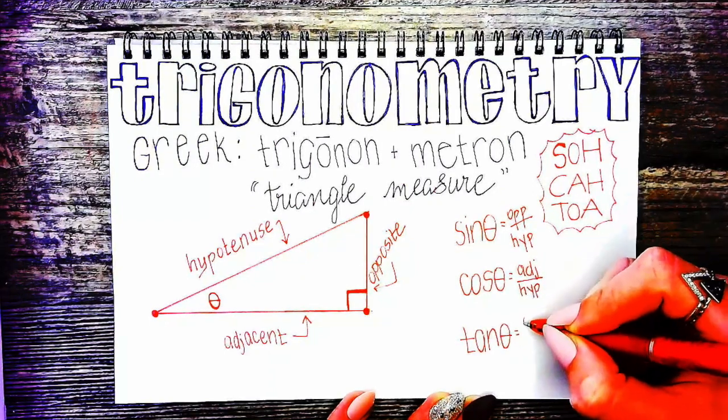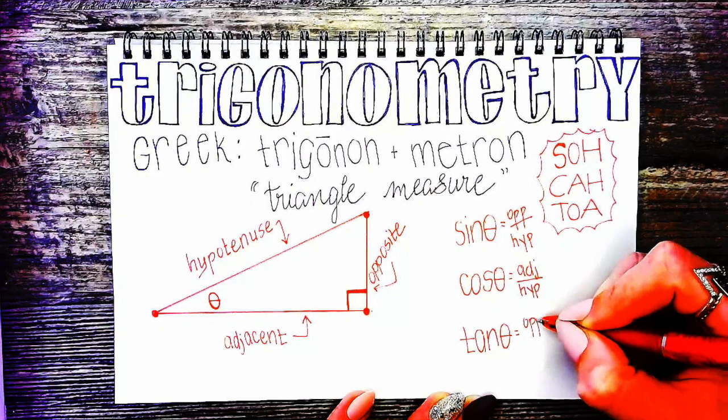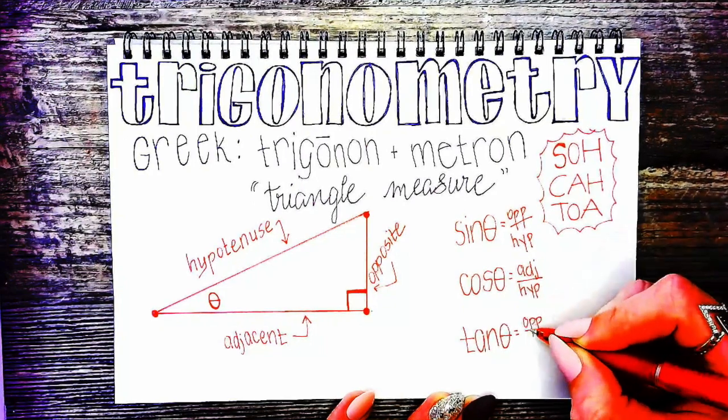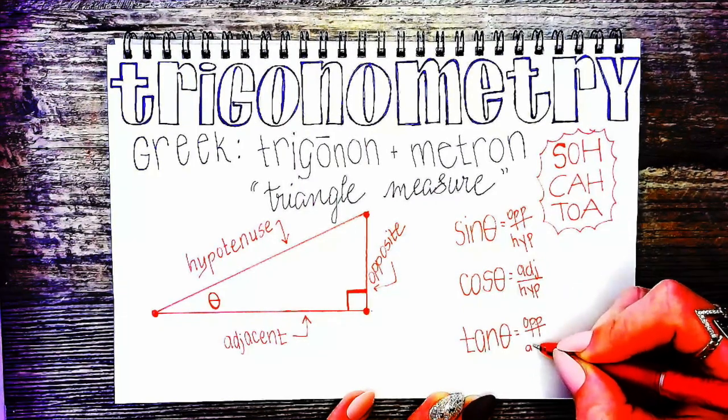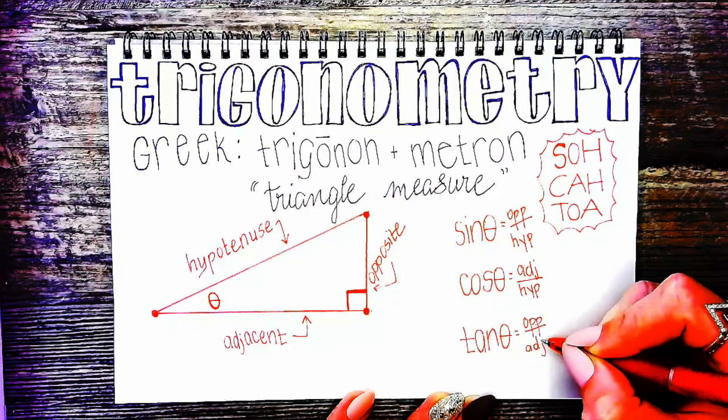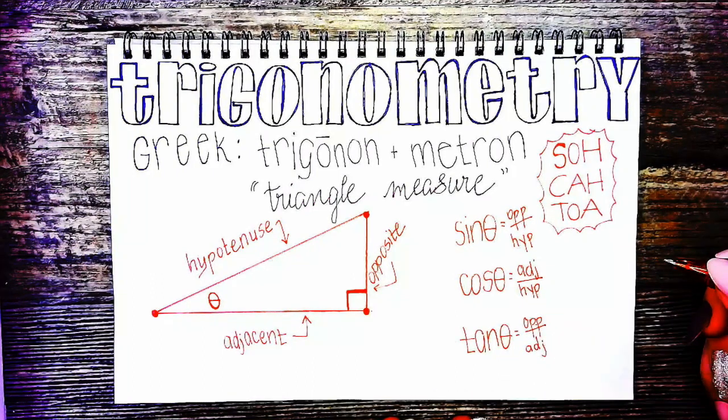And TOA is to help us remember that tangent of theta is equal to the opposite over the adjacent.